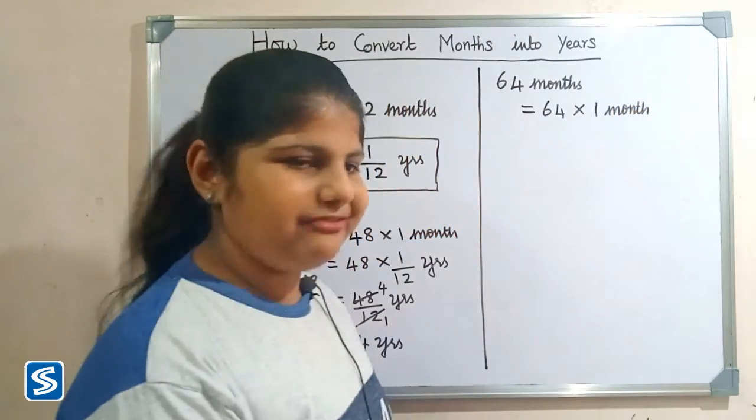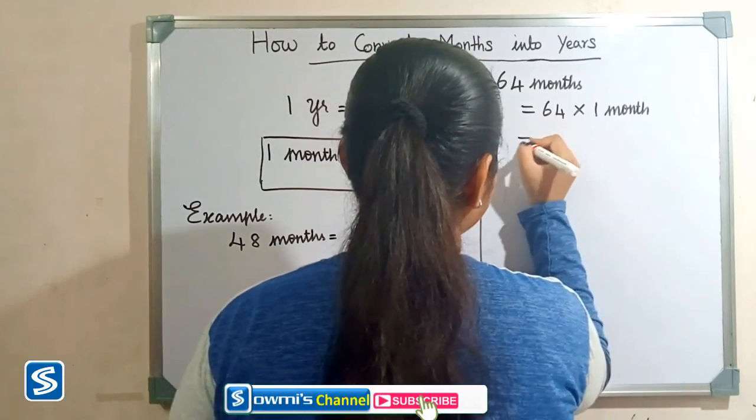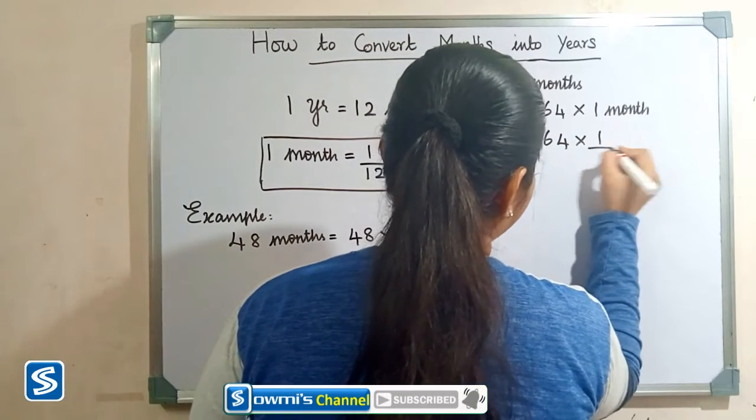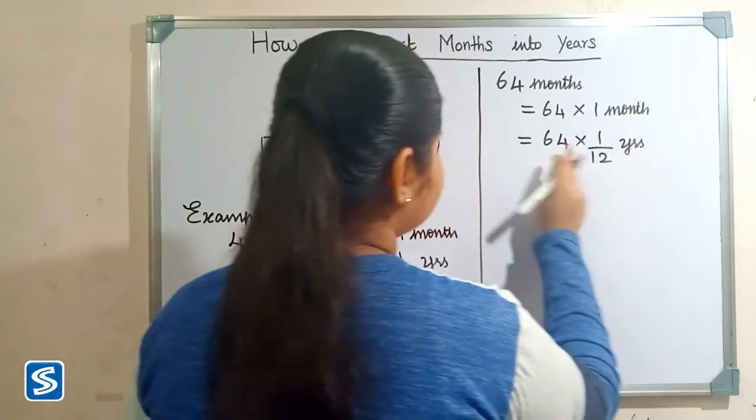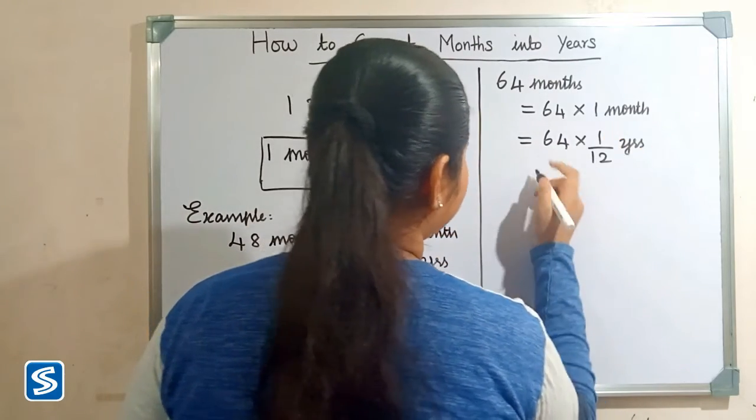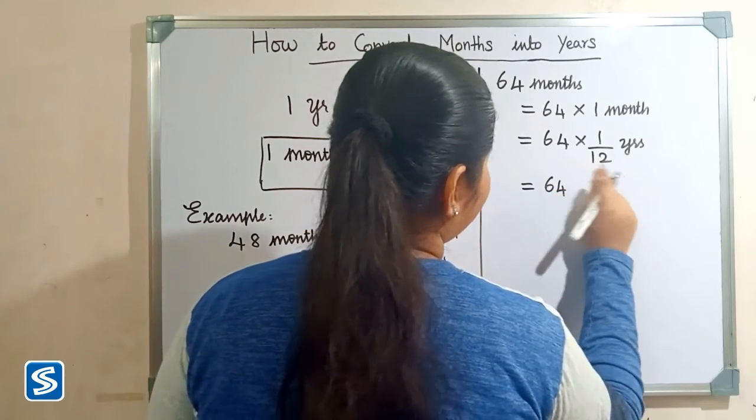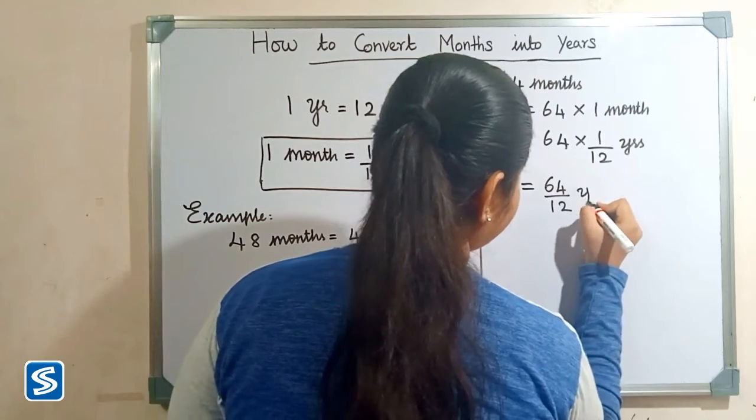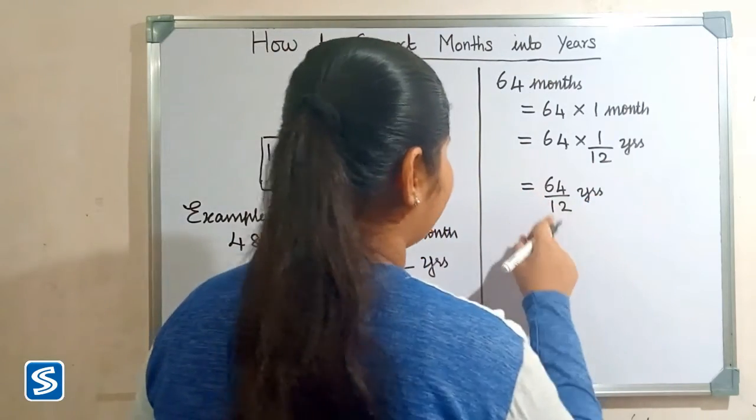Now we have to substitute 1/12 years in the place of one month. So 64 × 1/12 years. 64 × 1 will be 64, so 64/12 years. Now we have to divide 64 by 12.